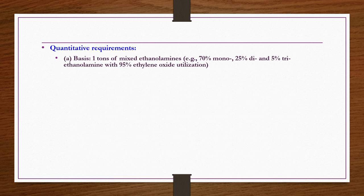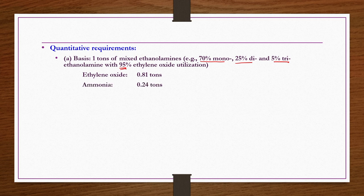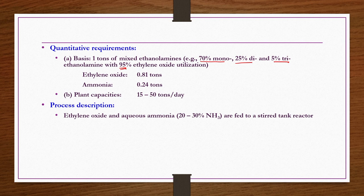Quantitative requirements: for 1 ton of mixed ethanolamines (70% monoethanolamine, 25% diethanolamine, 5% triethanolamine) with 95% ethylene oxide utilization, you require 0.81 tons of ethylene oxide and 0.24 tons of ammonia. Plant capacity is usually 15 to 50 tons per day. Ethylene oxide and aqueous ammonia solution (20 to 30% ammonia) are fed to a stirred tank reactor. Ammonolysis is exothermic, so cold water is circulated through reactor jackets to control temperature.